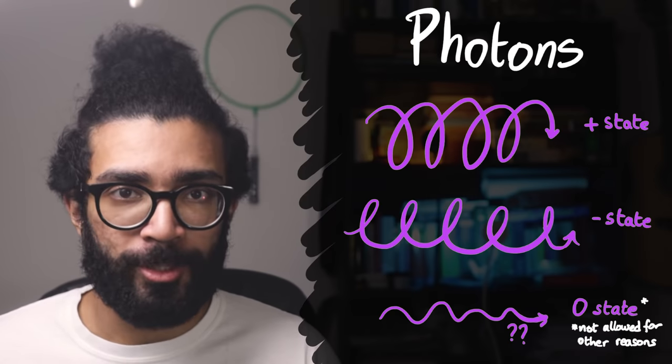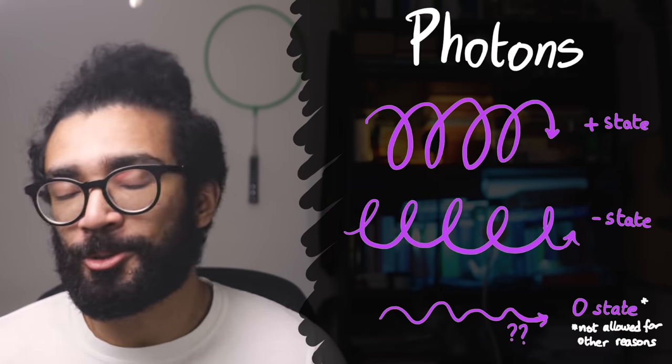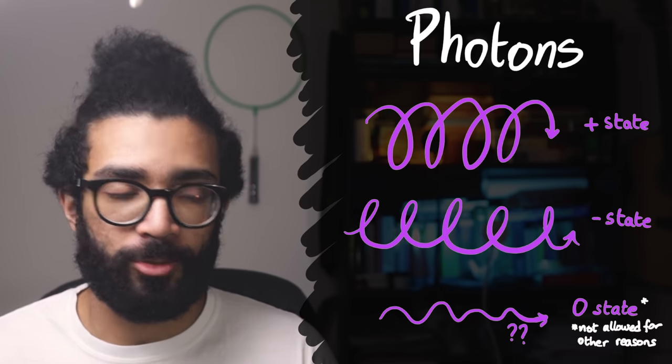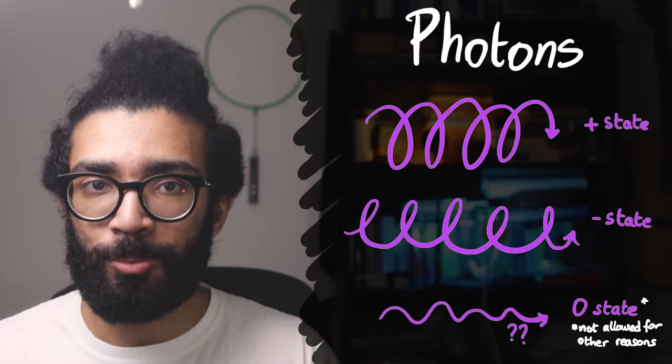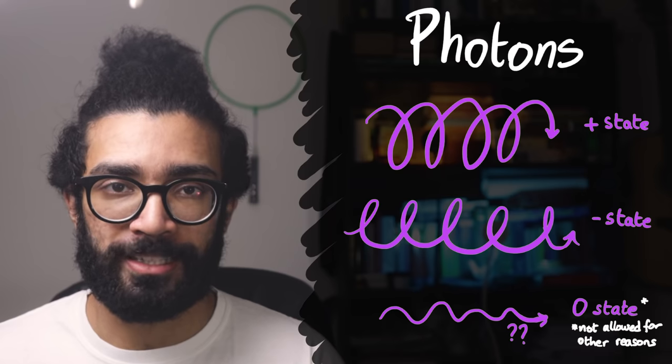Photons, for example, have three possible spin measurements. And there are also particles that can be found in one of four different spin states, or five different spin states, or six different spin states. I'd like to link this to common numerical descriptions of spin that you might see.